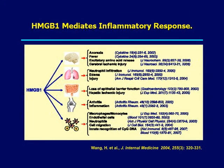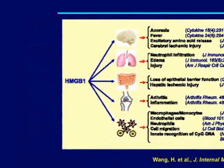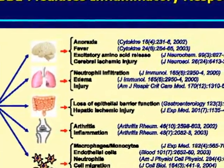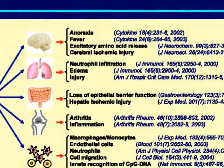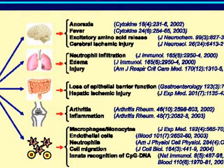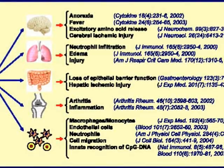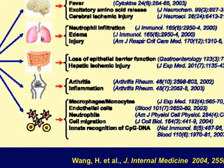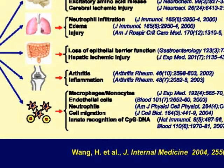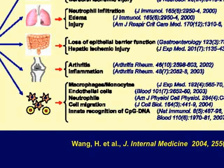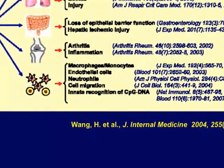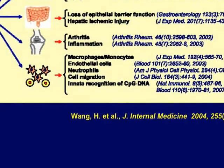Once HMGB1 is released by immune cells, it mediates many inflammatory responses. For example, if you inject the recombinant protein into the brain, it could cause fever and the release of excitatory amino acids such as glutamate. If you inject the protein into lung tissue, it causes neutrophil infiltration, production of cytokines, lung edema, and injury. Similarly, HMGB1 could cause loss of epithelial function when injected into the peritoneal cavity, and injection into a joint also causes inflammation. HMGB1 can act on a wide range of cells including macrophages, monocytes, endothelial cells, and neutrophils, and can also alert and attract various cell types to the site of infection and injury.